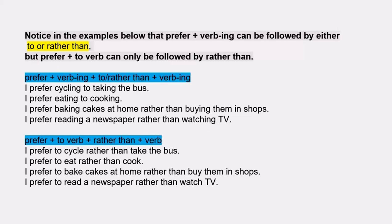When you are using 'prefer' with 'to' as an infinitive, you don't need to put ING with the verb. So when you are using 'to,' just use 'rather than.' You cannot use another 'to' with this. For example: 'I prefer to cycle rather than take the bus.' Compare: 'I prefer cycling to taking the bus.' Both are the same and give the same meaning. But when you are using 'prefer' with 'to' as an infinitive, only use 'rather than.'